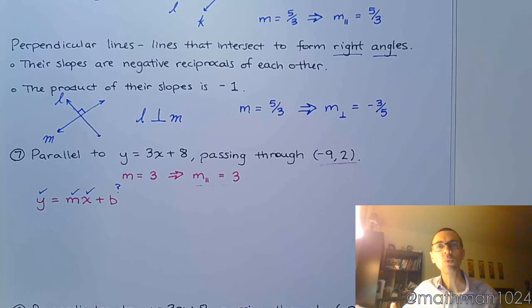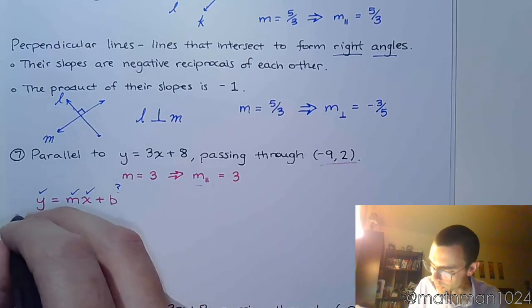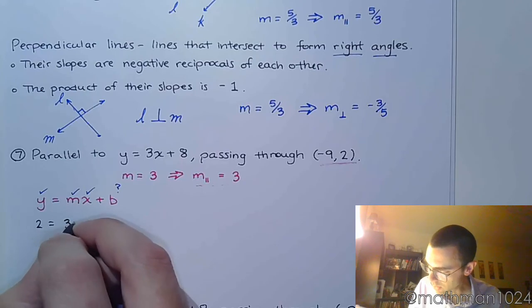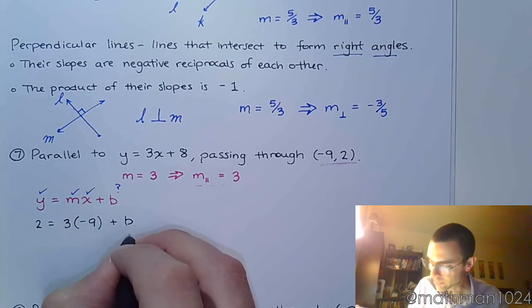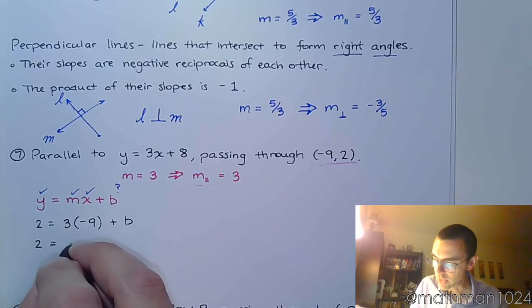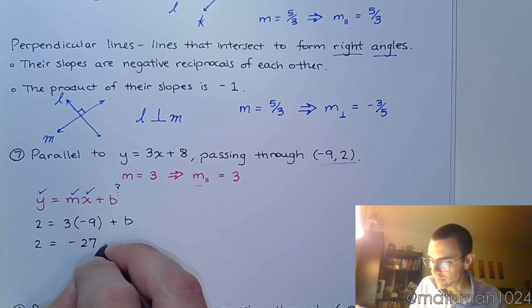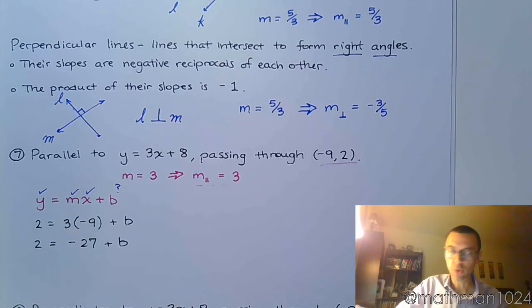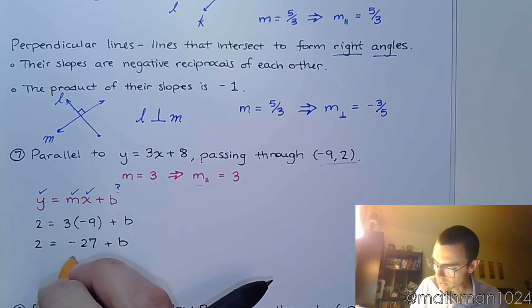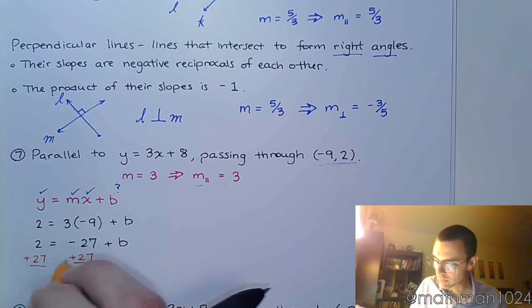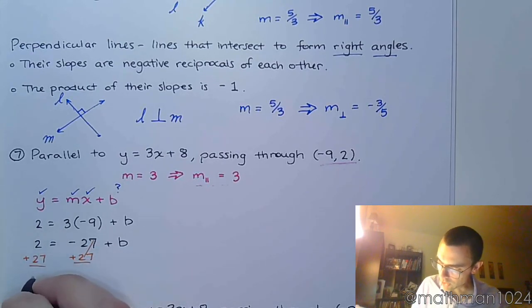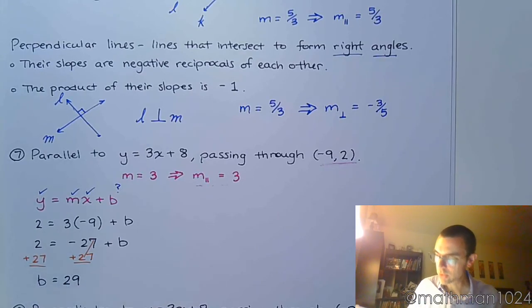So you plug in what you know. My y value is 2. My slope is 3. And x is negative 9. And so we just go through the process of getting b by itself. You have this nice linear equation. You're going to add 27 on both sides to finish isolating b. And so we get that b is equal to 29.